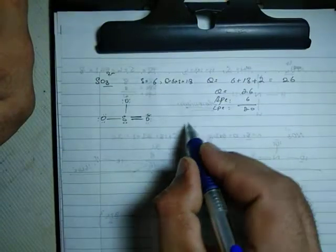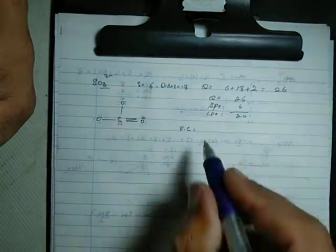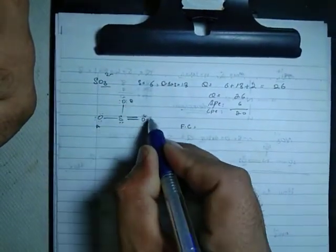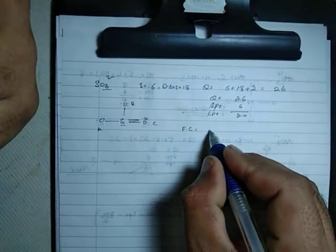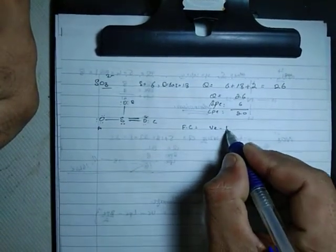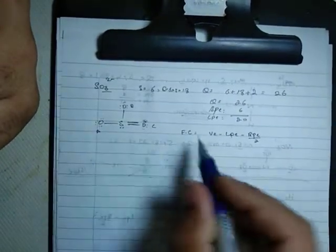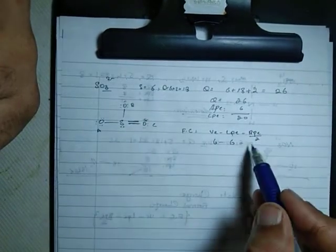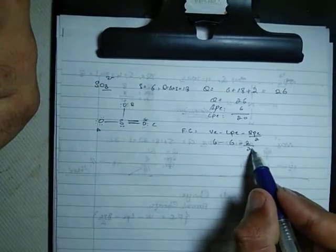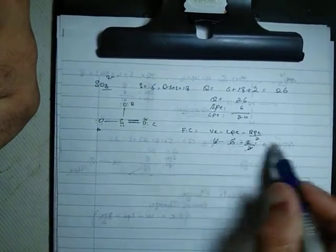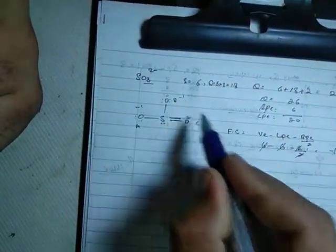Let's calculate the formal charge for each oxygen. Using the formula VE minus LPE minus BPE divided by 2: 6 minus 6 minus 2 divided by 2 equals minus 1. All three oxygens have FC of minus 1.